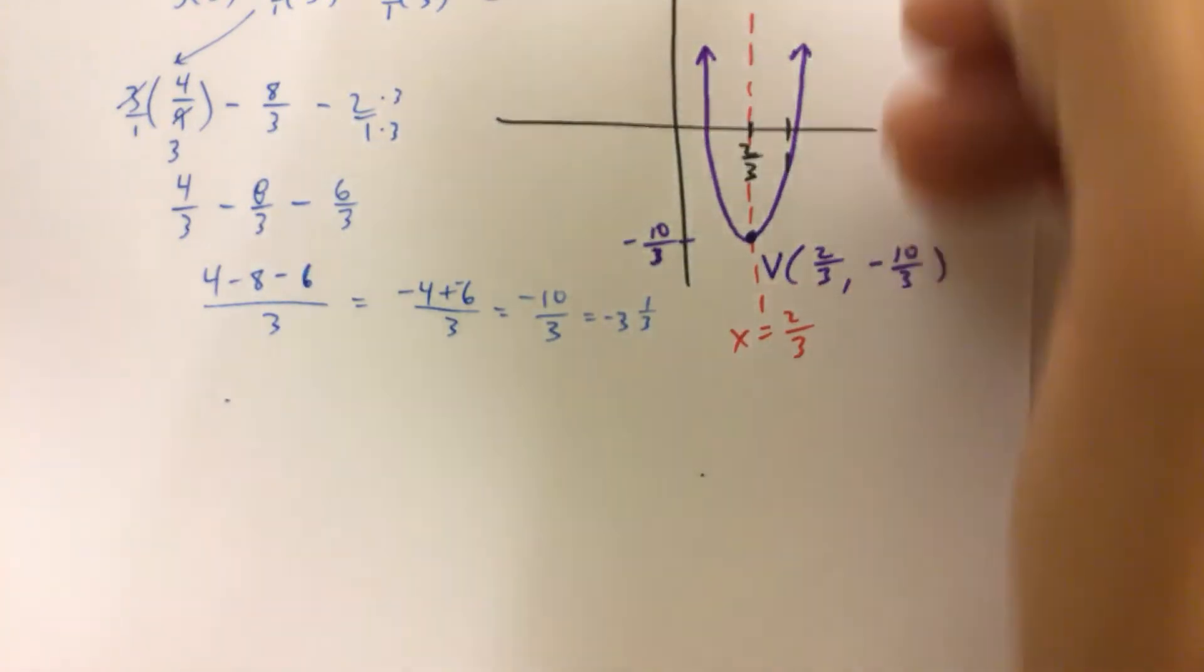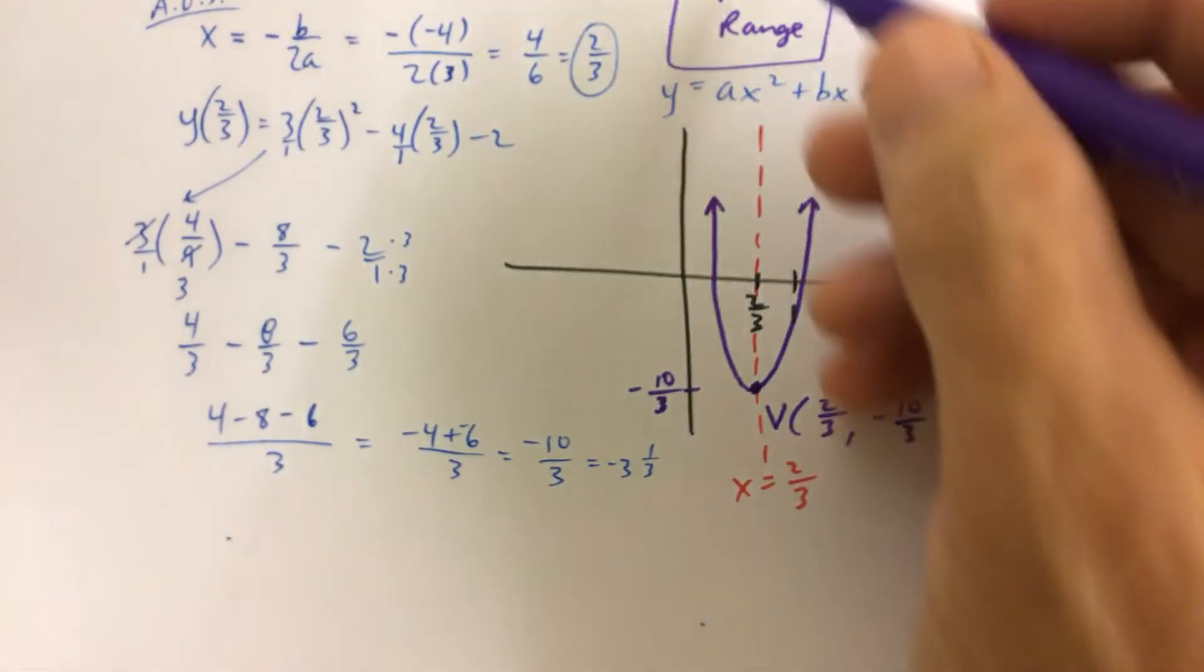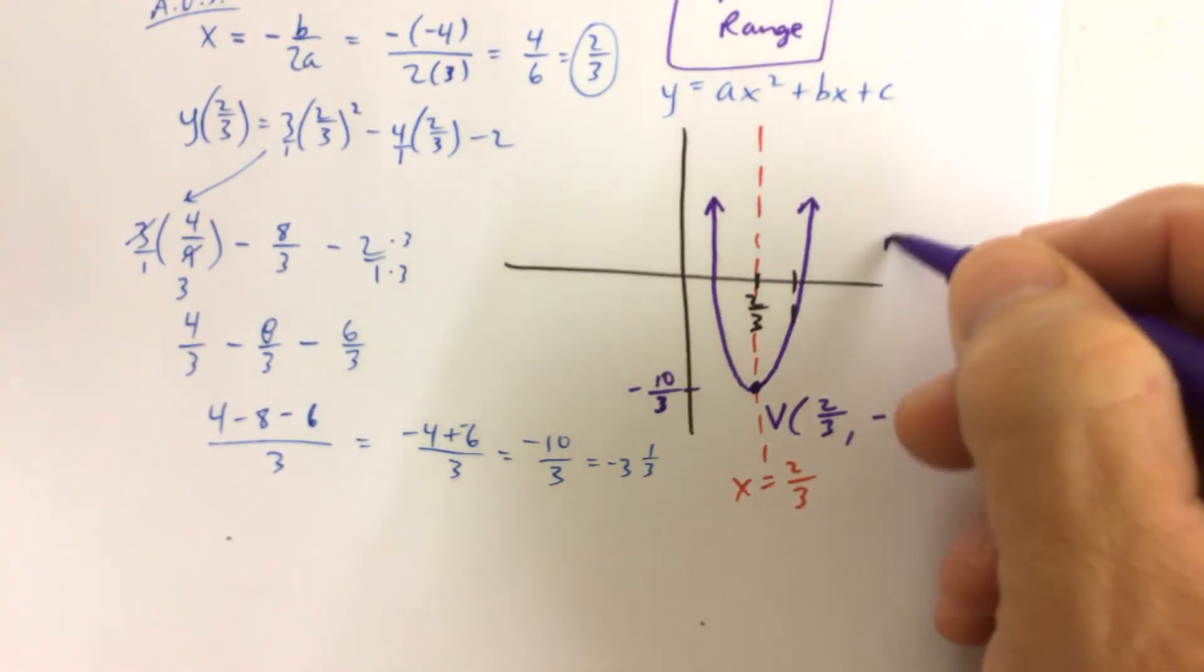So we have our vertex check. Axis of symmetry check. Max and min. So there's no max on this one. No max.